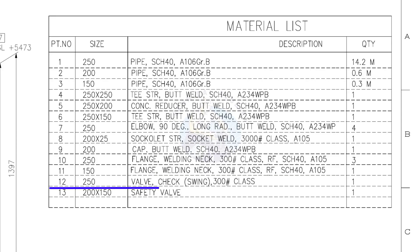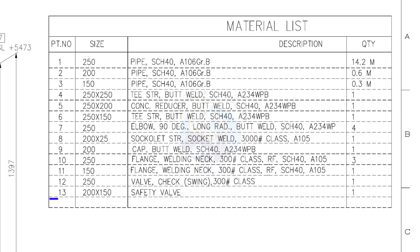Item number 12: 250 NB check valve, swing type, class 300 pound. Quantity: 1. Item number 13: 200 into 150 safety valve. Quantity: 1.